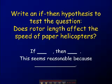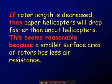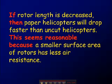If you were going to write an if-then hypothesis to test this question — does rotor length affect the speed of paper helicopters? — try it yourself right now, pause it and try. Hopefully you have something like this: 'If rotor length is increased or decreased, then paper helicopters will drop faster or slower than uncut helicopters. This seems reasonable because a smaller surface area of rotors has less air resistance.' That would seem pretty reasonable. This is a good way to write a hypothesis.